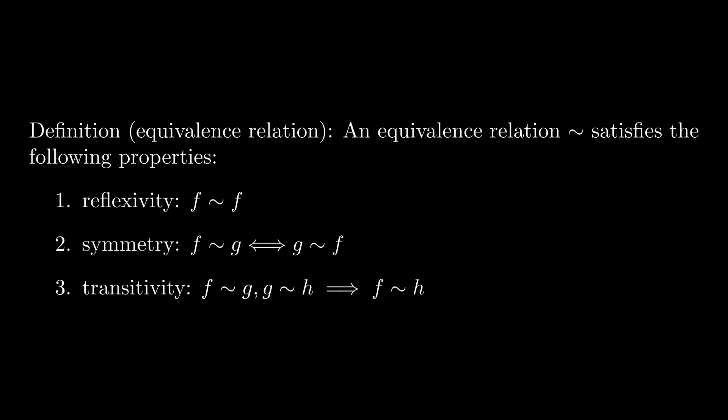Here, the definitions of reflexivity and transitivity are the same as before. However, rather than having antisymmetry here, we instead have symmetry, which basically just states that if f is equivalent to g, then this can only be true if and only if g is equivalent to f.